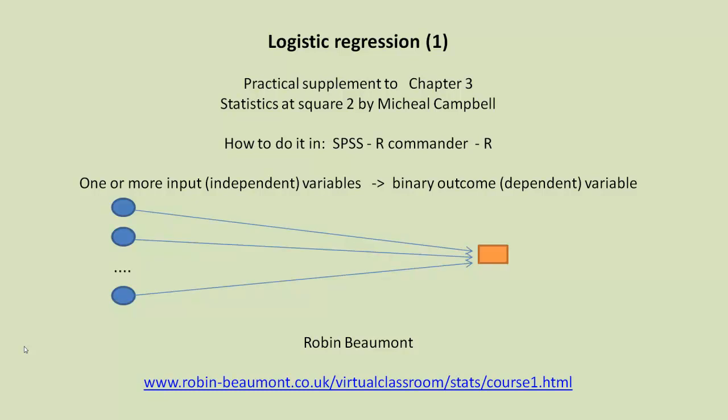You can think of this diagrammatically in terms of simple little circles on the left-hand side, each independent variable, and they relate to or affect this binary outcome of a single dependent variable.